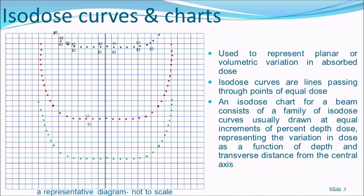Isodose charts or curves are represented by lines connecting equal dose points, used to represent planar or volumetric variation in absorbed dose. For example, to obtain a 90% isodose line, you find all points in the calculation grid where the dose equals 90%. If one point is 95% and an adjacent point is 83%, you interpolate to find 90% somewhere between them, then connect these points to get the 90% isodose line.